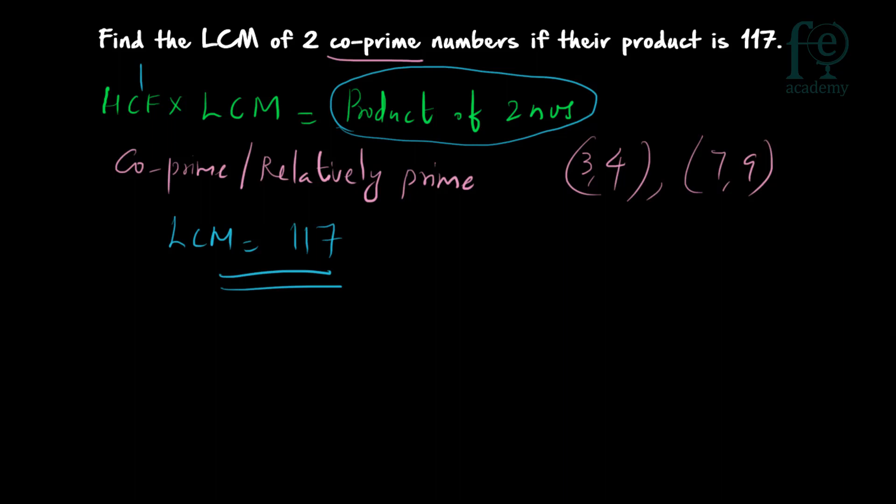So here you get 2 concepts from this question. First: HCF of 2 numbers × LCM of the same 2 numbers is equal to the product of the numbers. Second: co-prime numbers, or relatively prime numbers, means they do not have any common factor other than 1 — so the HCF for co-prime numbers is equal to 1.